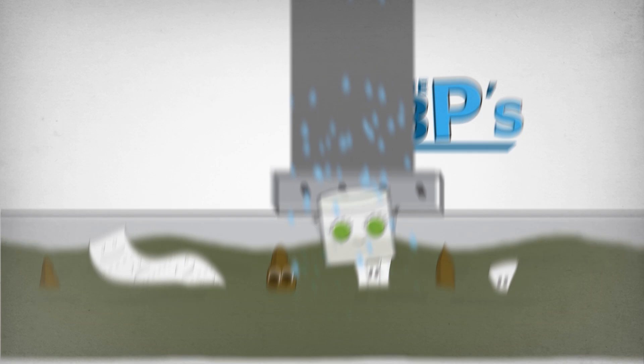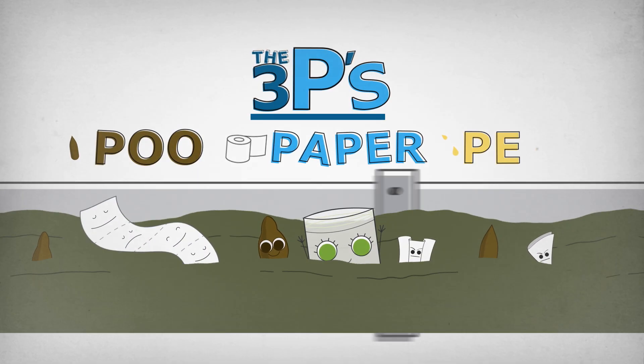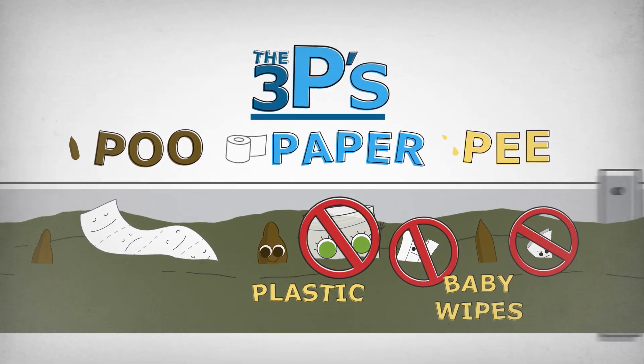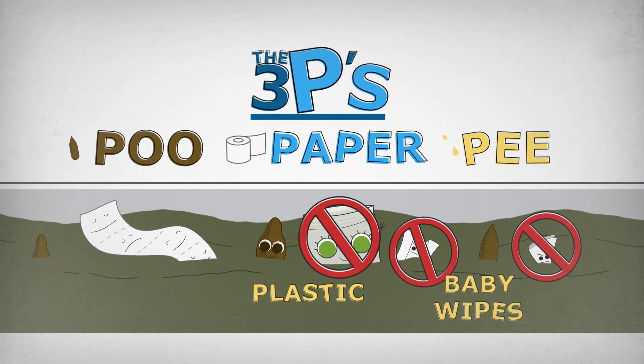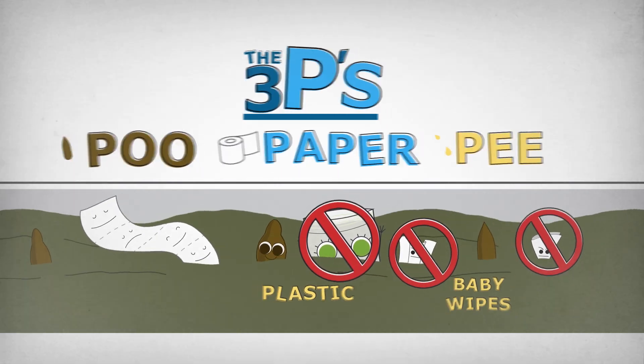Anything other than the water and the three P's—poop, paper, and pee—can be a problem for the sewer. That's why it's important to keep all trash out of our drains.